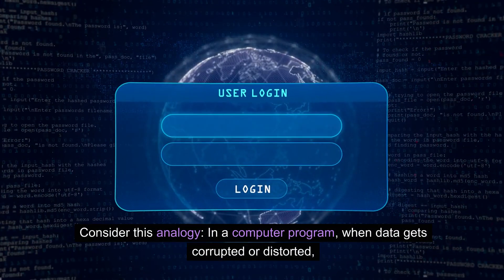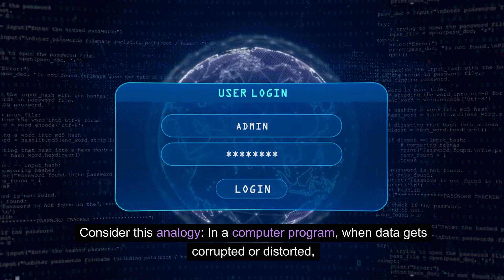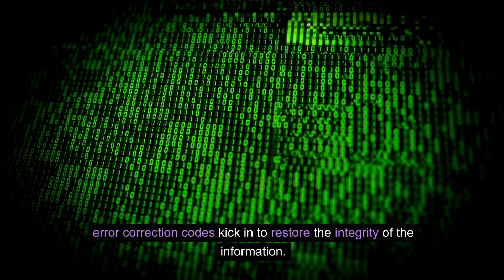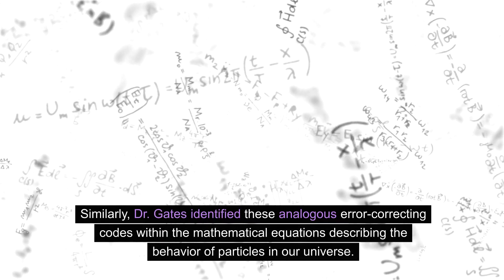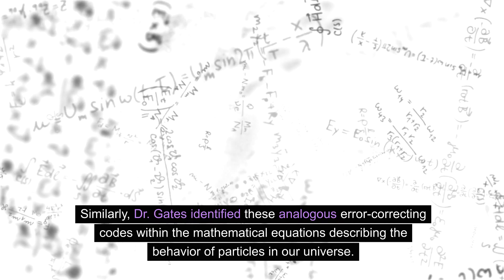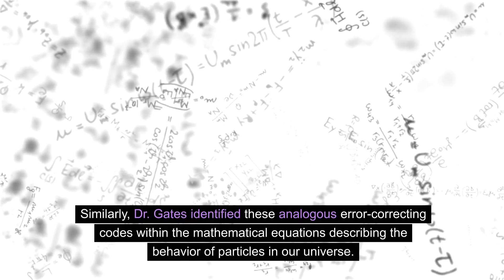Consider this analogy. In a computer program, when data gets corrupted or distorted, error correction codes kick in to restore the integrity of the information. Similarly, Dr. Gates identified these analogous error-correcting codes within the mathematical equations describing the behavior of particles in our universe.